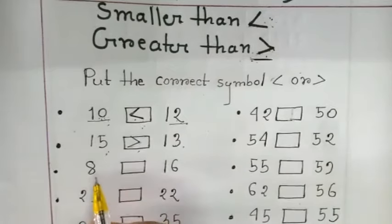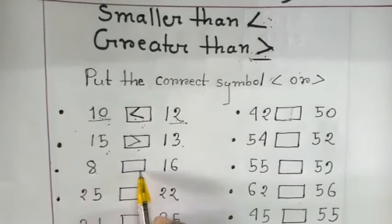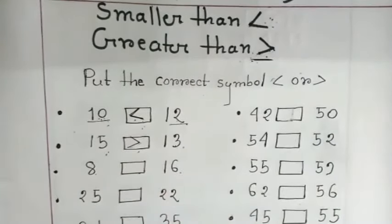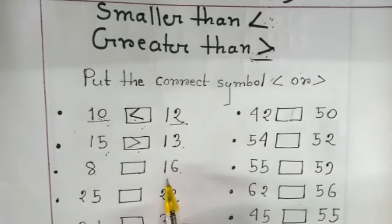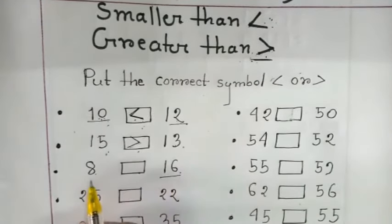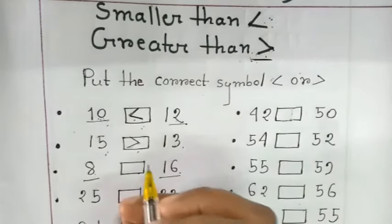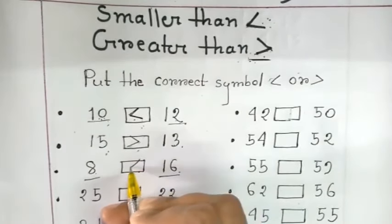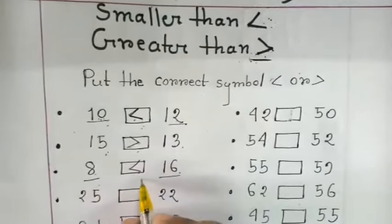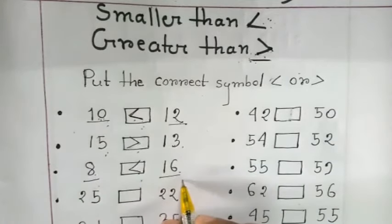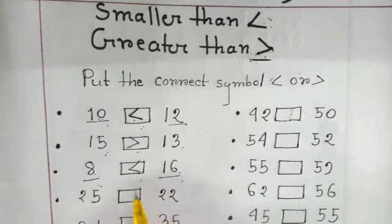Let's do next one. So which one is bigger number? 16. And this 8 is smaller. Now put this sign. 8 is less than 16.